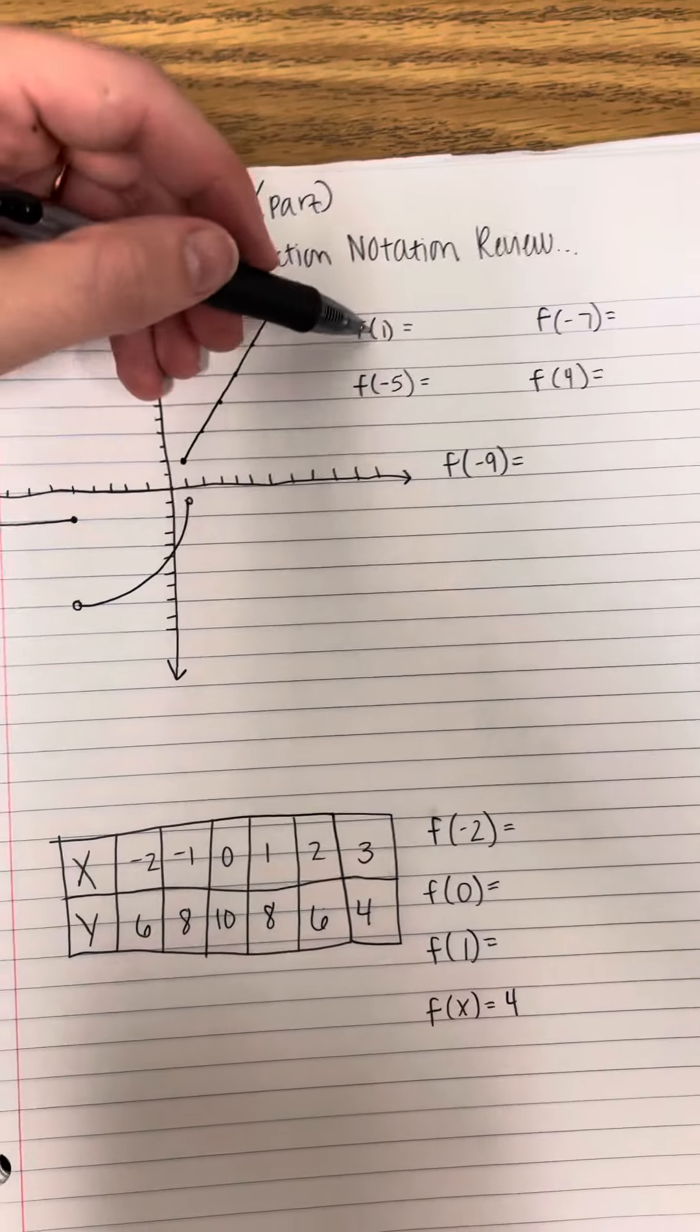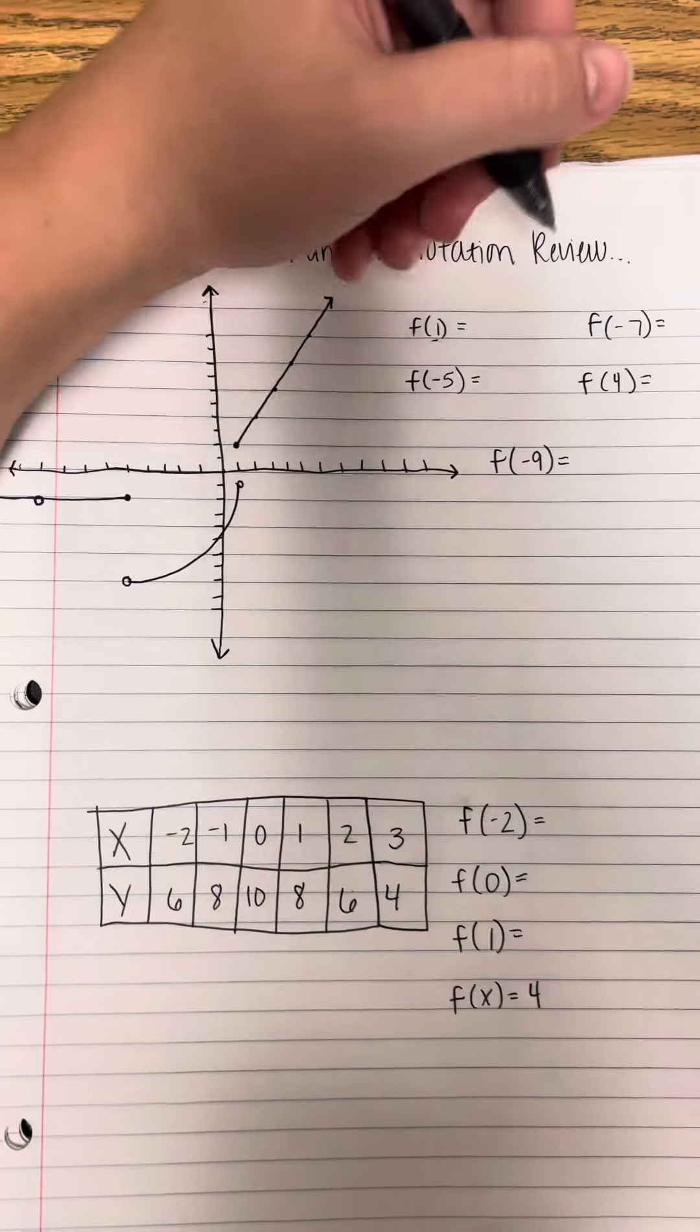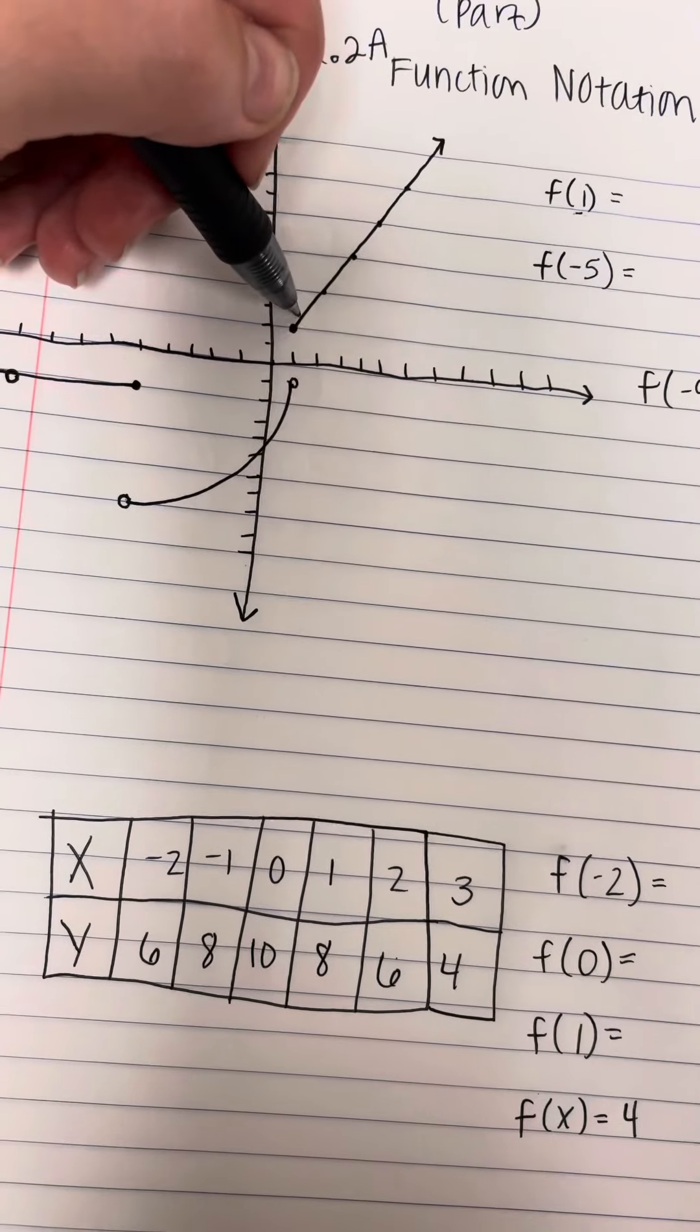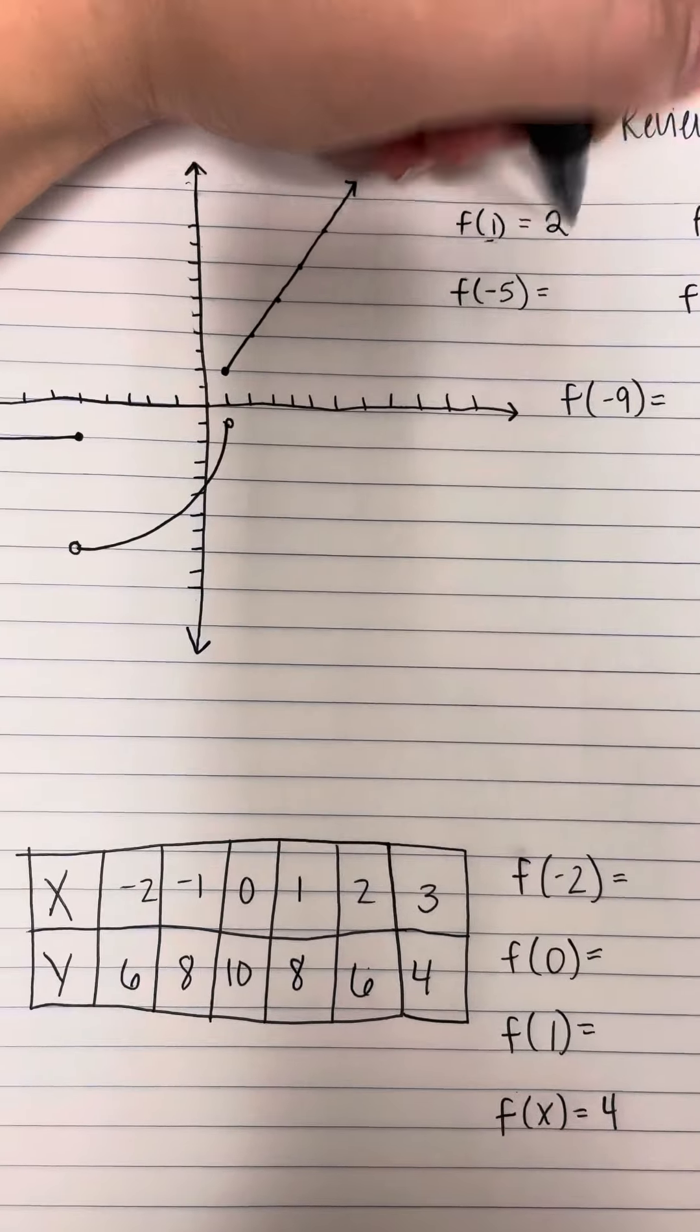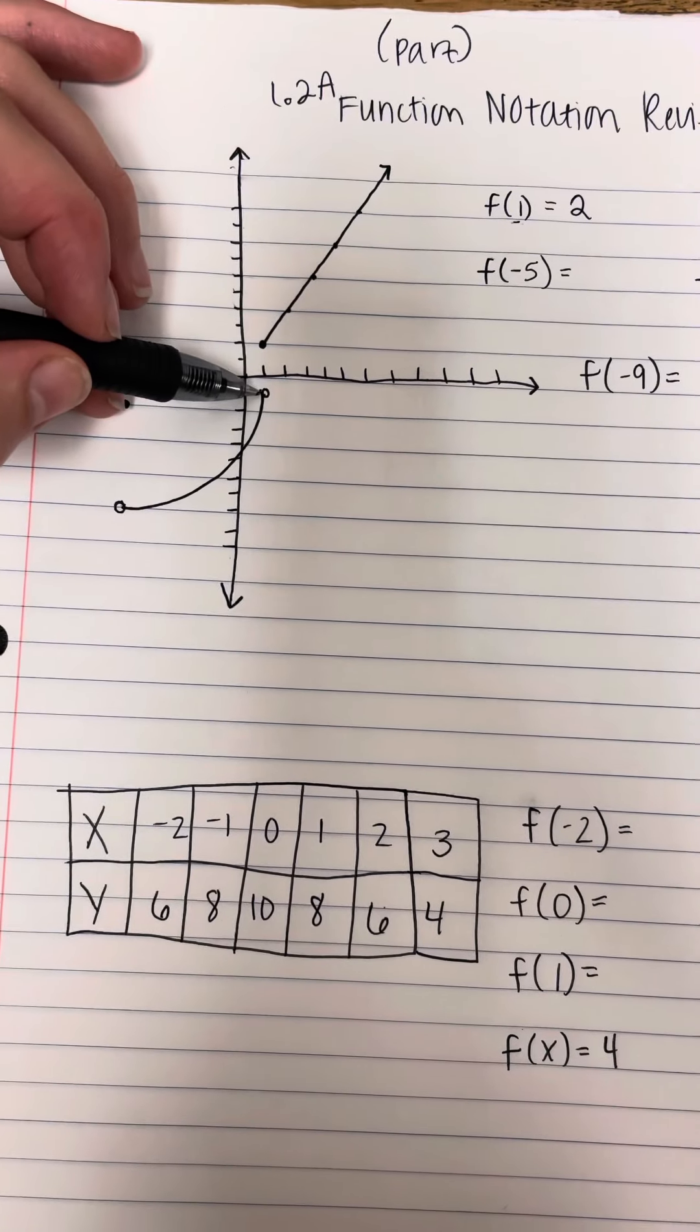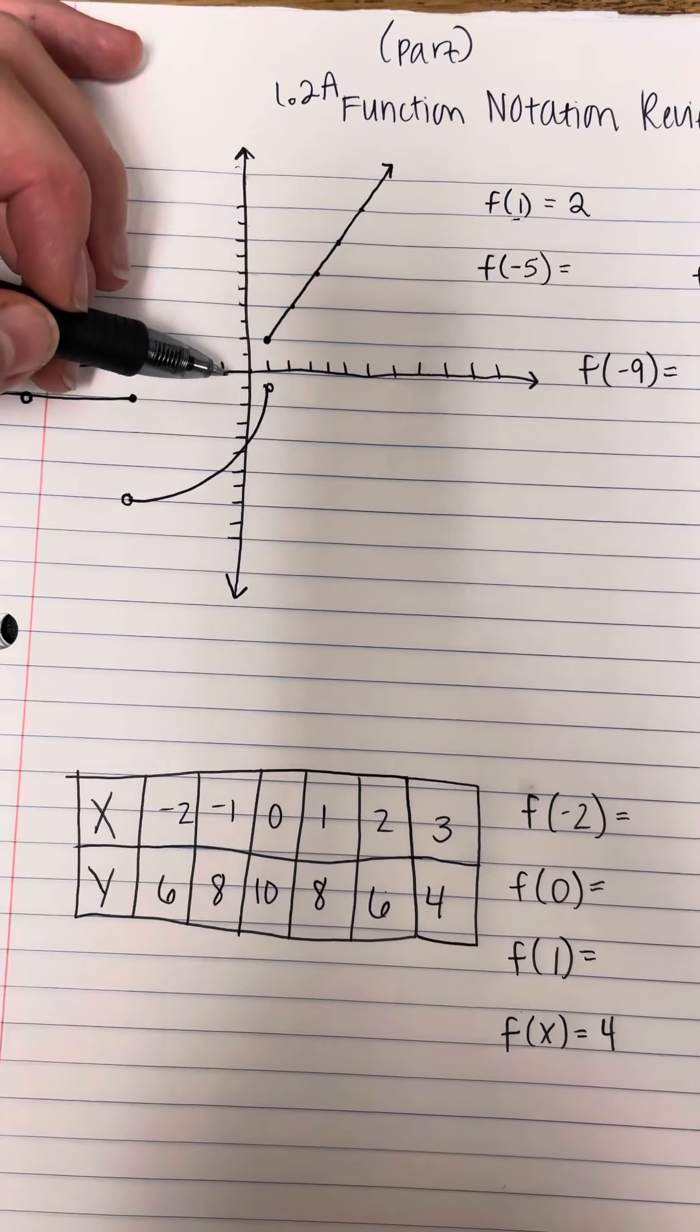So when x is 1, what is y? So it's going to be 1 here, or I'm sorry, 2. When x is 1, y is 2 because of the solid dot. So because it's an open hole here, that value does not count. The only one that counts is the one that's going to be the solid dot.